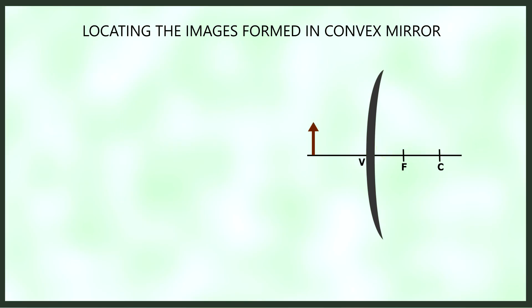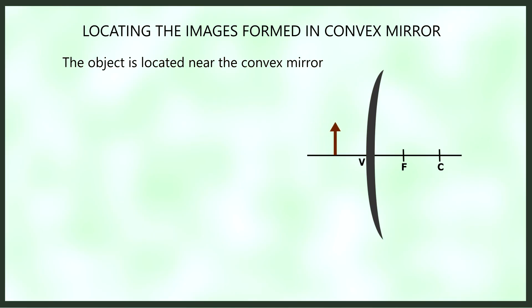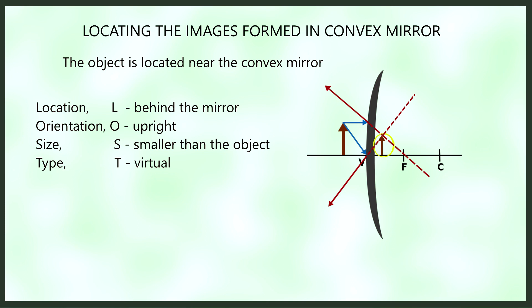Next, we place the object near the convex mirror, using the PF ray and V ray. Again, we extend the reflected rays to locate the image. The image is found behind the mirror, upright, smaller than the object, and virtual.